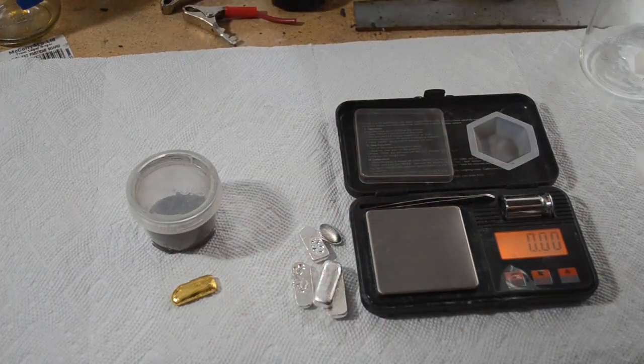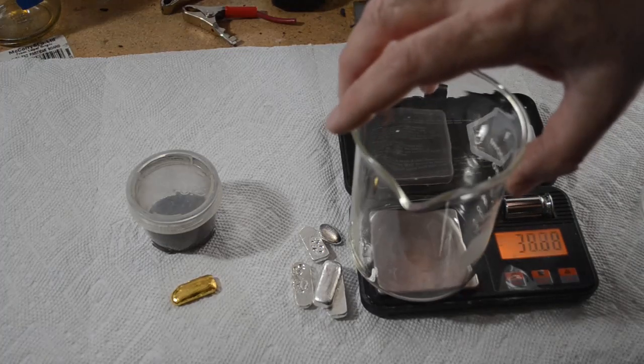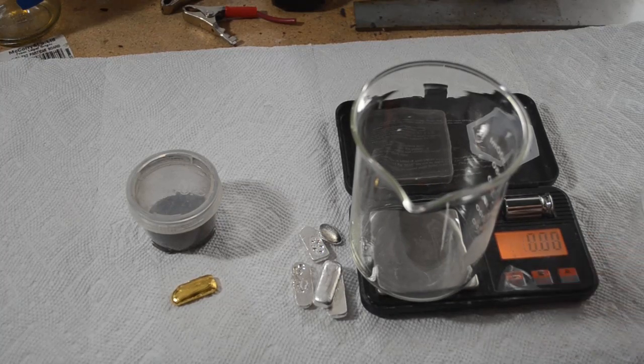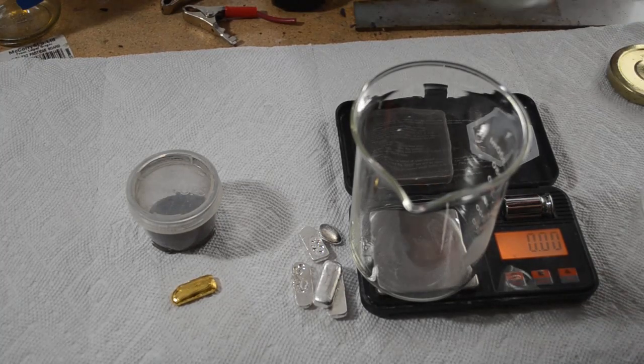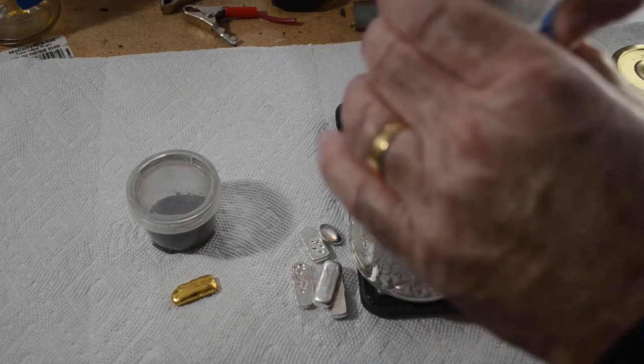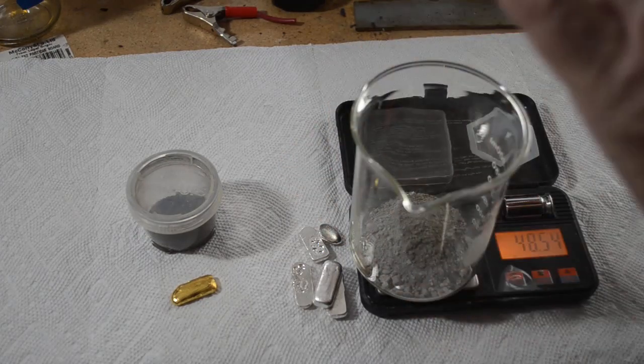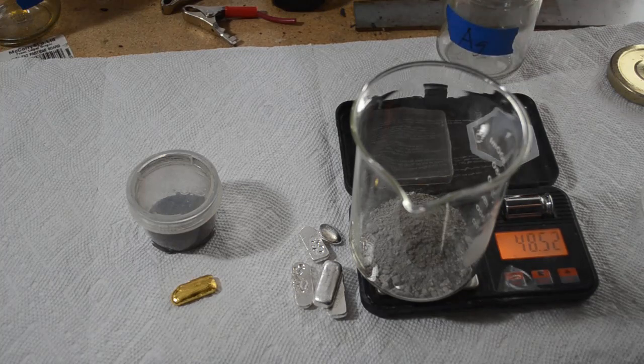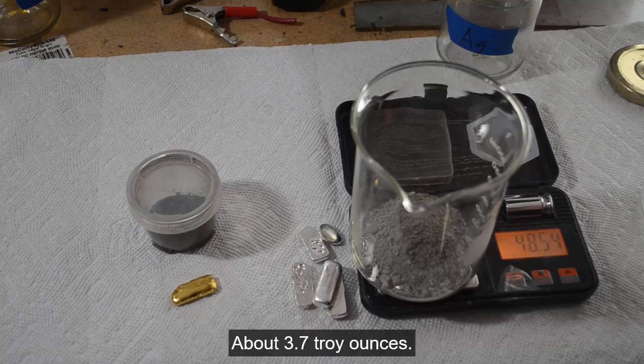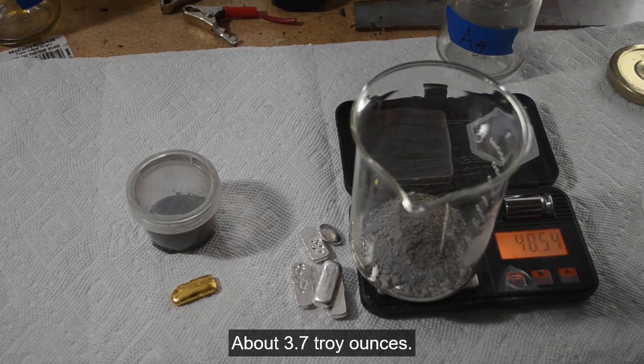So let's zero this out. Let's see how much cement silver I've got here that I haven't melted down yet. So another 48 and a half grams. We'll call that, if I did the math right, that's 115.5 grams of silver.